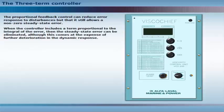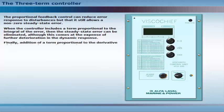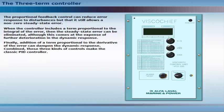The proportional feedback control can reduce error response to disturbances, but it still allows a non-zero steady-state error. When the controller includes a term proportional to the integral of the error, then the steady-state error can be eliminated, although this comes at the expense of further deterioration in the dynamic response. Finally, addition of a term proportional to the derivative of the error can dampen the dynamic response.